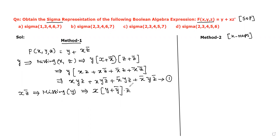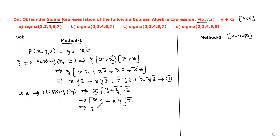Writing z' as it is, we multiply x by (y + y'), giving xy + xy'. Now multiplying this sum with z' gives: xyz' + xy'z'. This is the second expression.